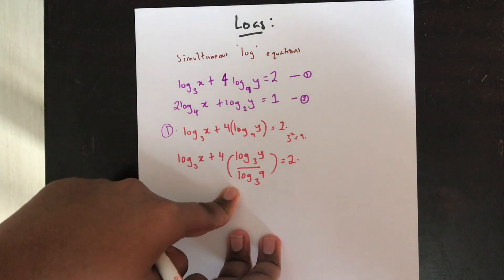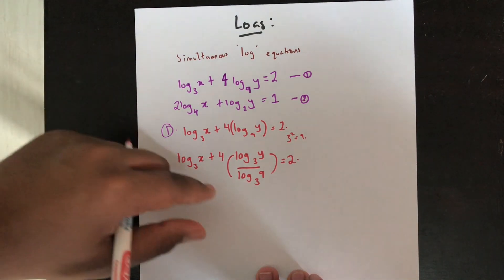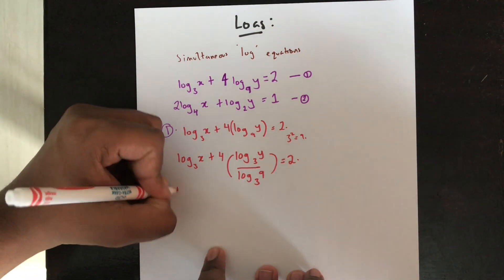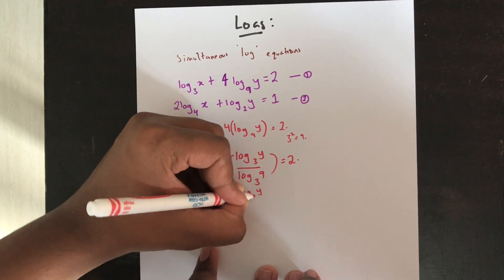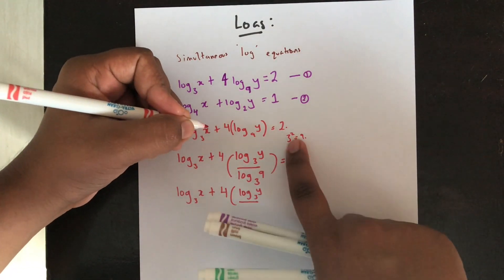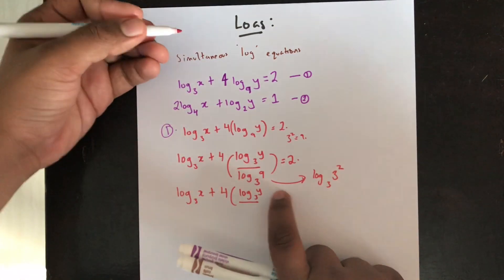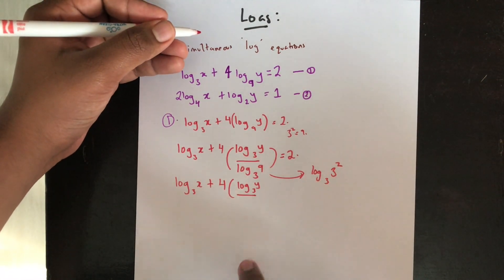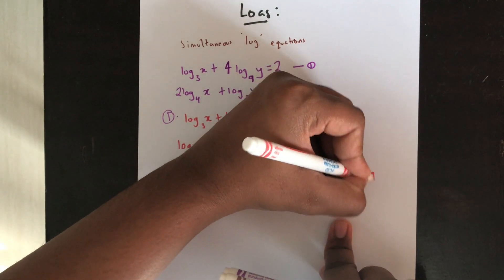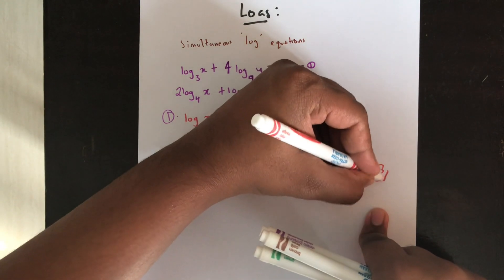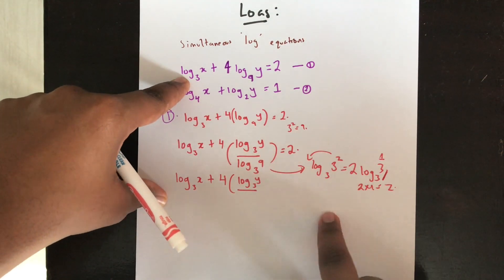If you aren't fully understanding the change of base step, have a look at our change of base technique video. Now, since 3 squared equals 9, log 9 base 3 is the same as log 3² base 3. Bringing the 2 down by the power rule gives 2 log 3 base 3, and since the base and argument are the same, that equals 2 times 1, which is 2. So log 9 base 3 equals 2.